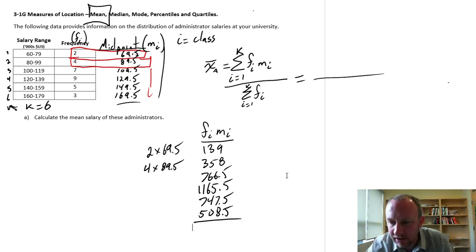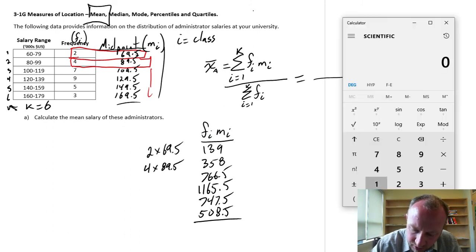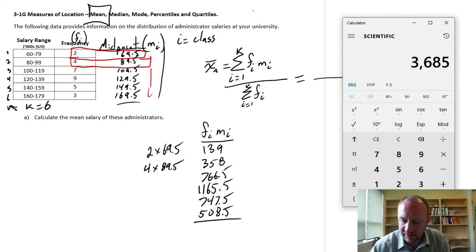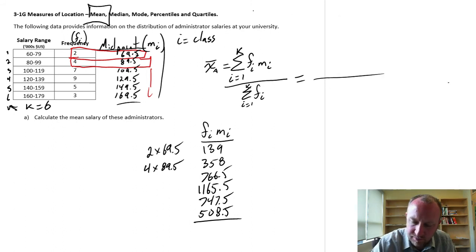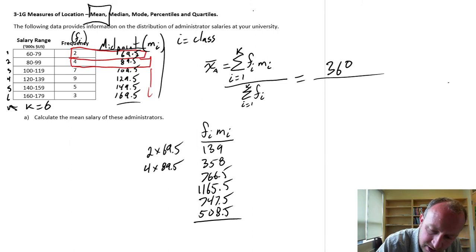Okay, and then if we add all of those together, that will give us our numerator. So 139 plus 358 plus 766.5 plus 1165.5 plus 747.5 plus 508.5 equals 3685. So 3685 is my numerator.